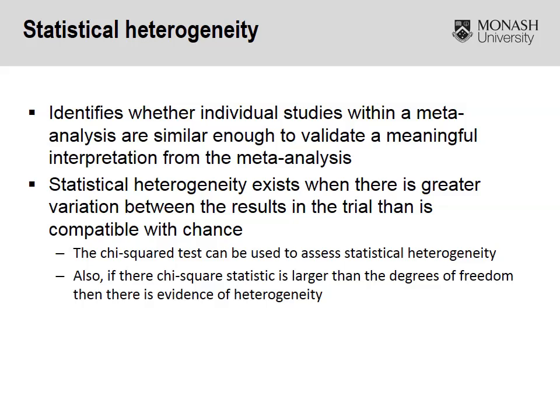There are a number of ways to identify whether heterogeneity is present in the meta-analysis. We can look at the chi-squared test. A quick way to do that is to see if the chi-squared statistic is larger than the degrees of freedom — if so, there is evidence of heterogeneity, at which point we'd be questioning the validity of the meta-analysis and combining the studies altogether. There are also other ways to identify whether statistical heterogeneity exists, which I'll indicate in the next slide.